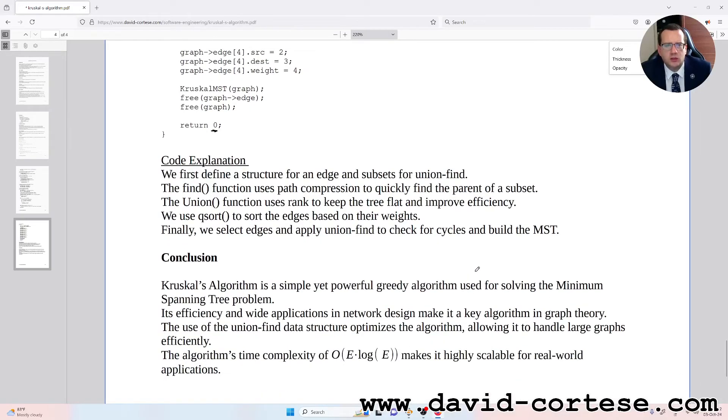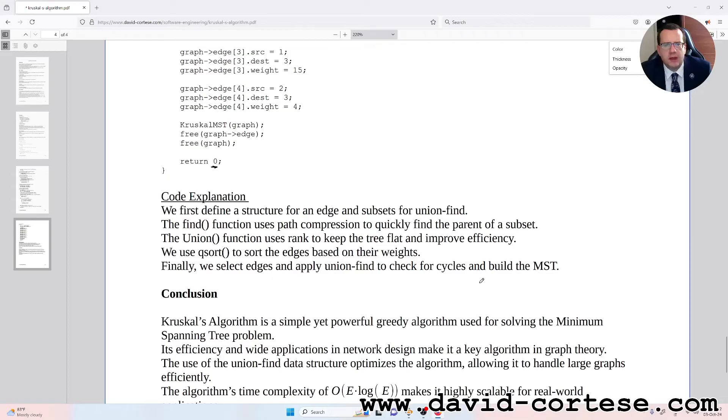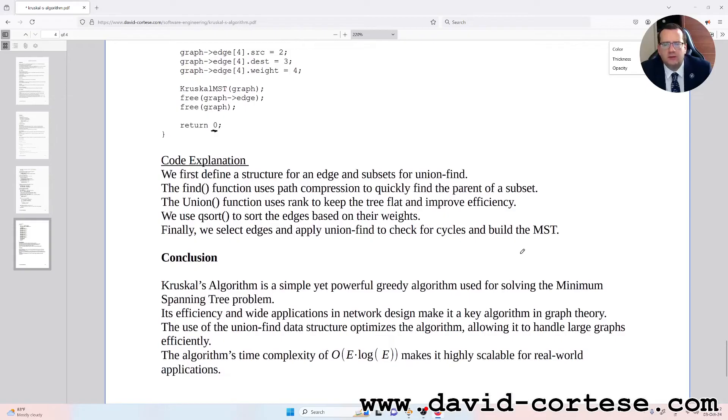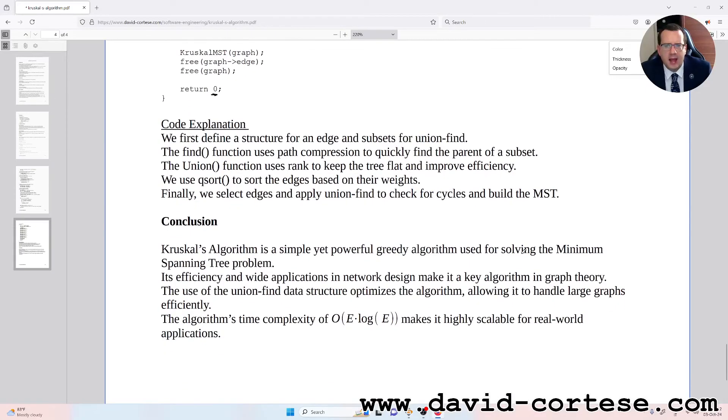The union function uses rank to keep the tree flat and improve efficiency. We use Q-sort to sort the edges based on their weights. Finally we select the edges and apply union-find to check for cycles and build the MST.